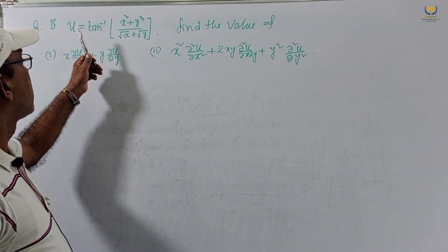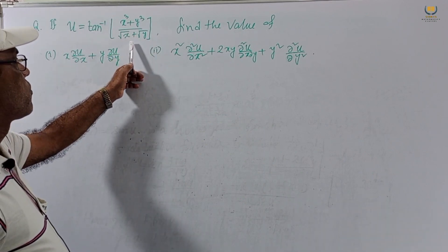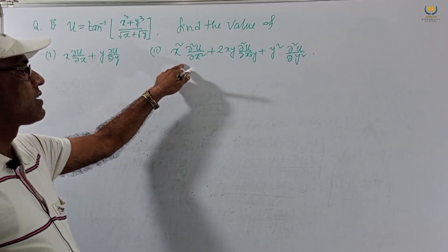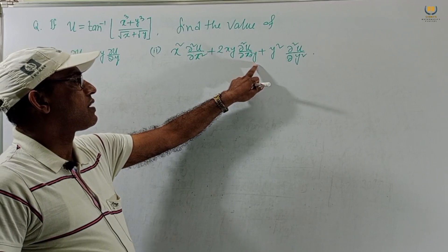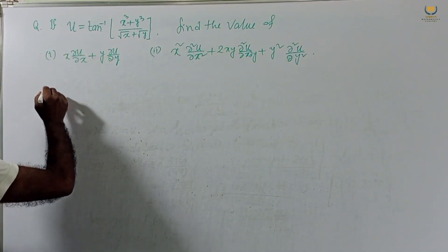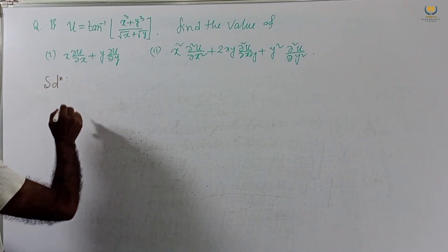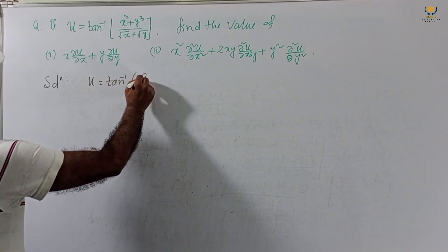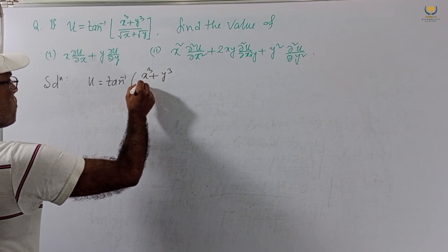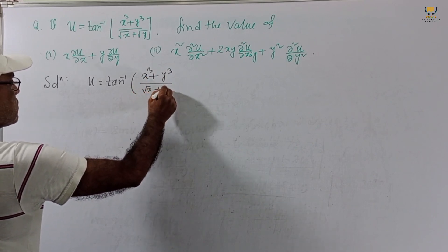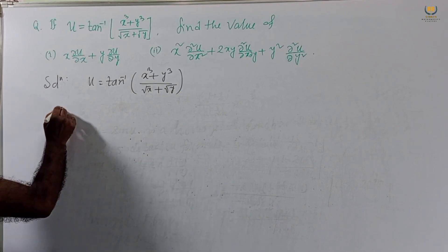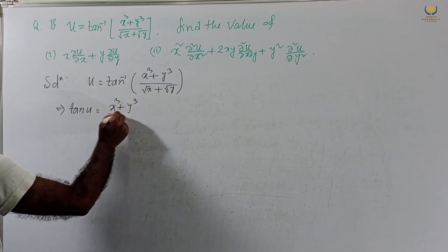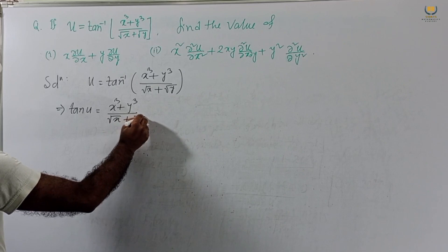Next problem: u = tan⁻¹((x³ + y³)/(√x + √y)). Find: (1) x·∂u/∂x + y·∂u/∂y, and (2) x²·∂²u/∂x² + 2xy·∂²u/∂x∂y + y²·∂²u/∂y². Starting the solution: given u = tan⁻¹((x³ + y³)/(√x + √y)), this implies tan u = (x³ + y³)/(√x + √y).